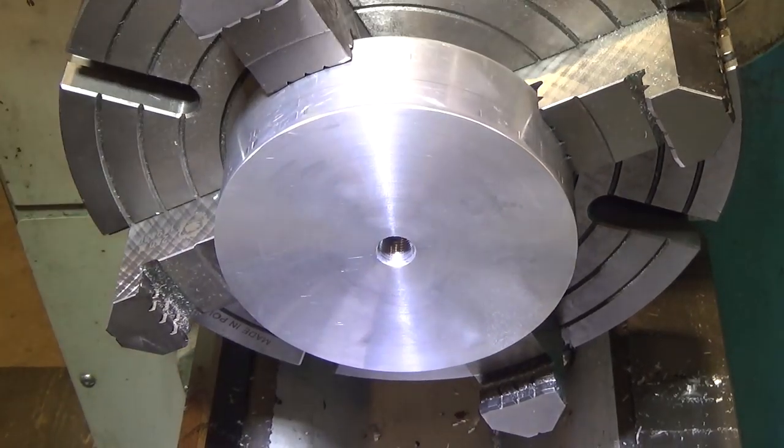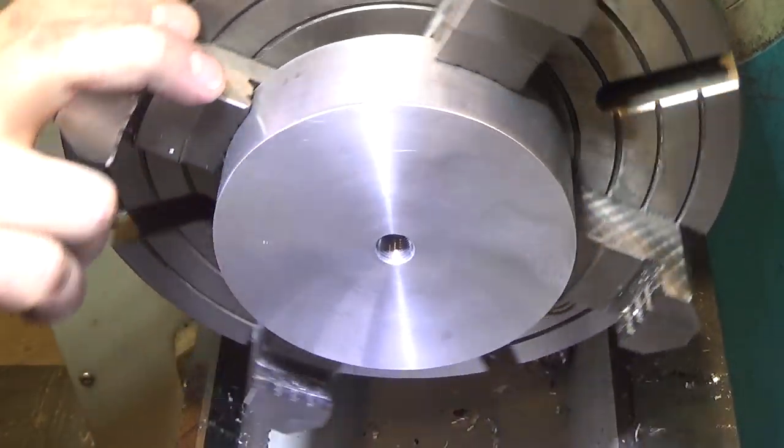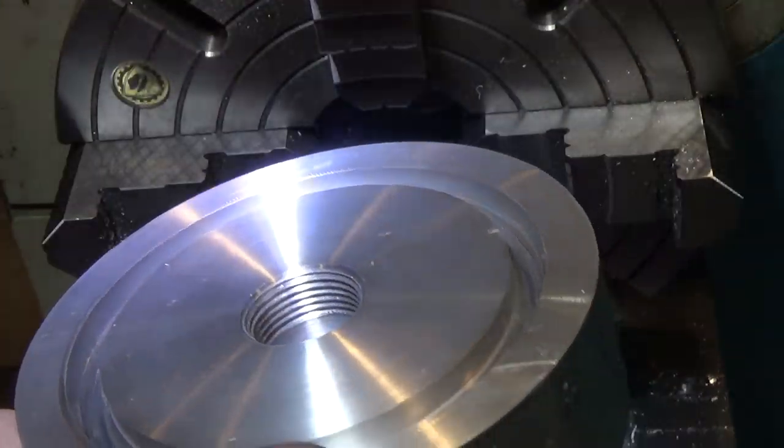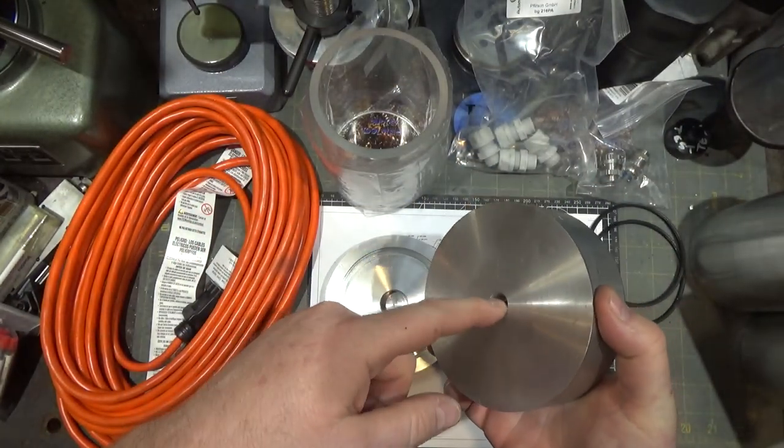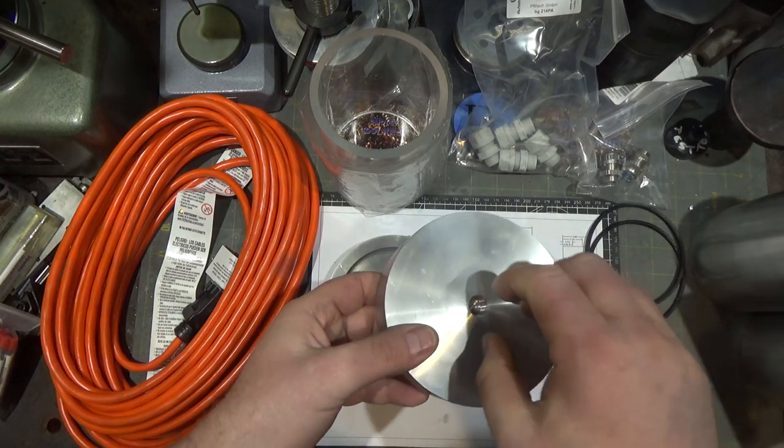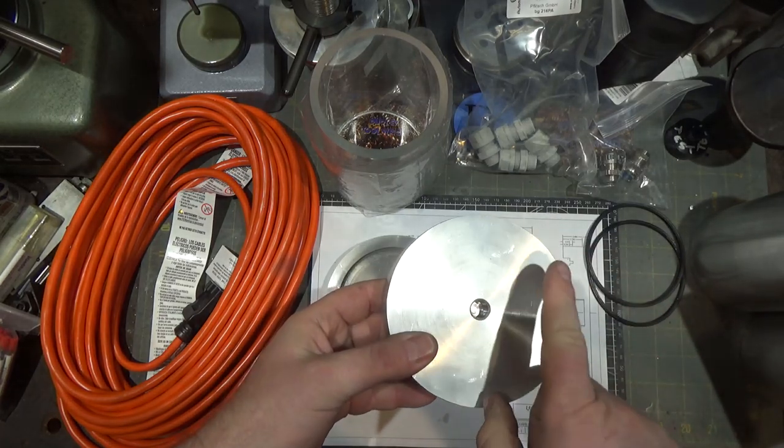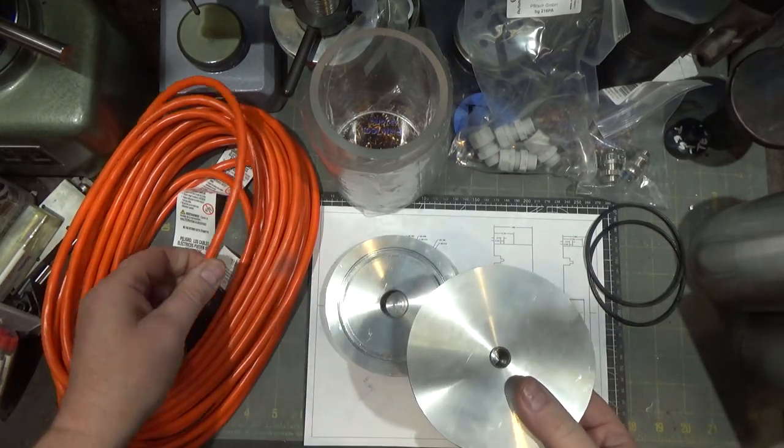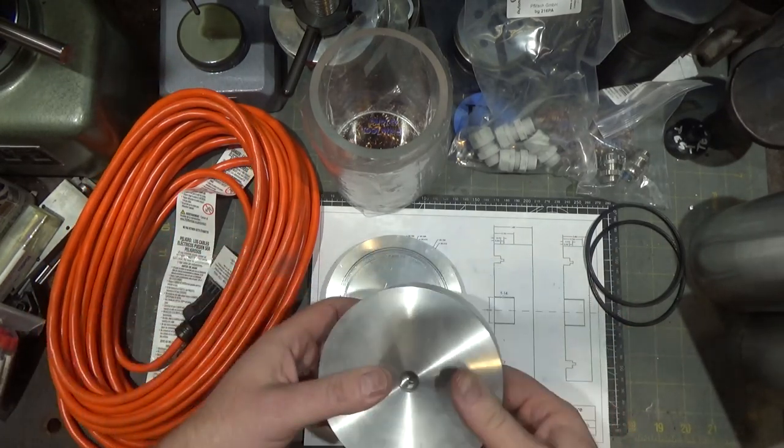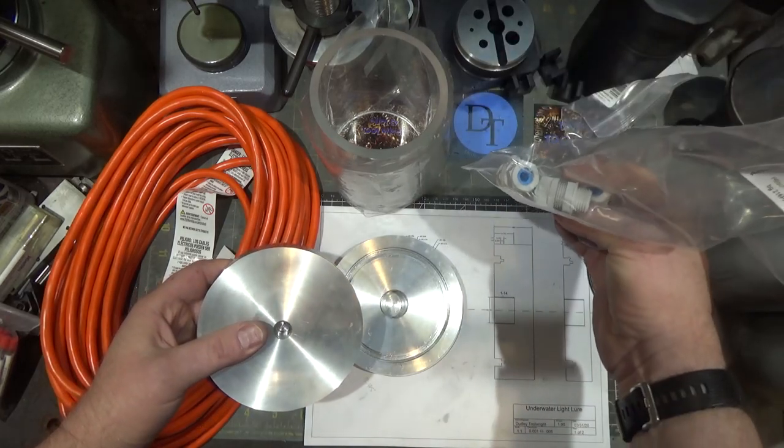This part is completed. We'll pop it out of the four jaw. And we are all done. All righty. So this is the end of part one. I've got the two parts done. This is the top with the half inch 20 threads. That will have an adapter that will grab on the extension cord that I'm going to be using. The extension cord will go through the glands here.